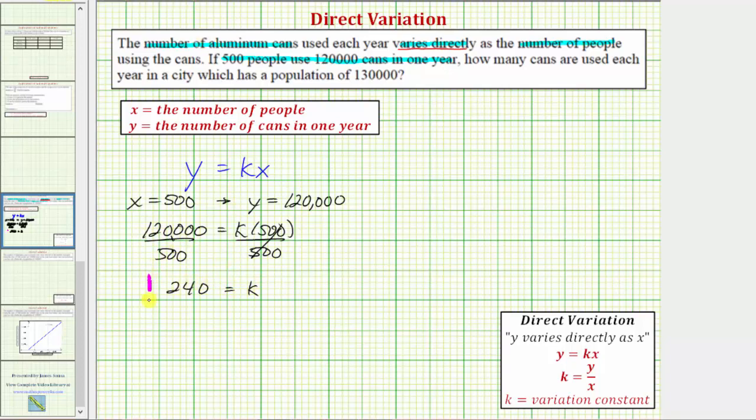So, now that we know that k is equal to 240, we can write the equation that models the situation. We now know that y is equal to 240 times x. And we can use this equation to finally answer the question.